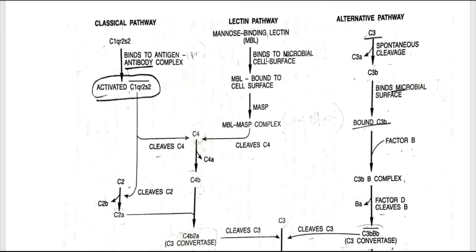The third pathway is the lectin pathway, also called the mannose-binding pathway or mannose-binding lectin (MBL) pathway. Lectins are proteins that bind to carbohydrate residues of a glycoprotein or polysaccharide.